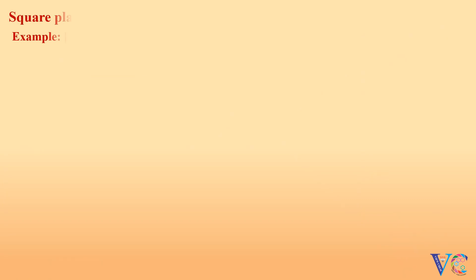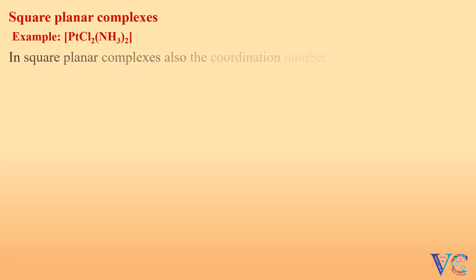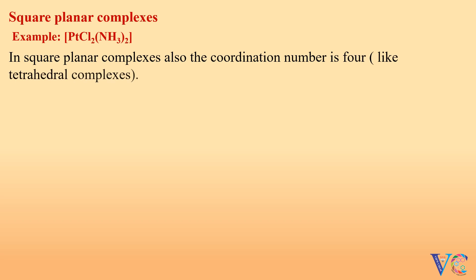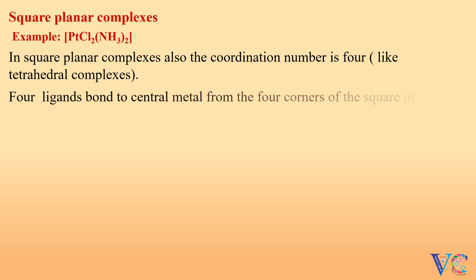Square planar complexes. In square planar complexes also, the coordination number is four. Like tetrahedral complexes, four ligands bond to the central metal from the four corners of the square in the same plane, hence the name square planar.